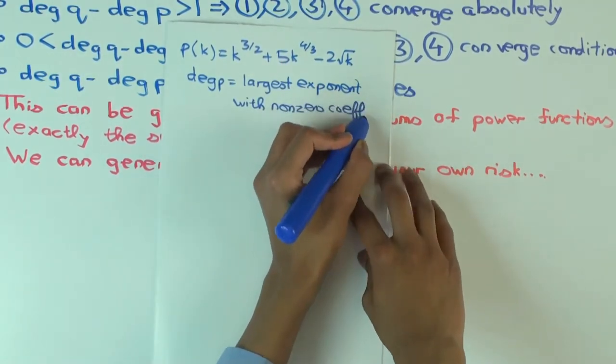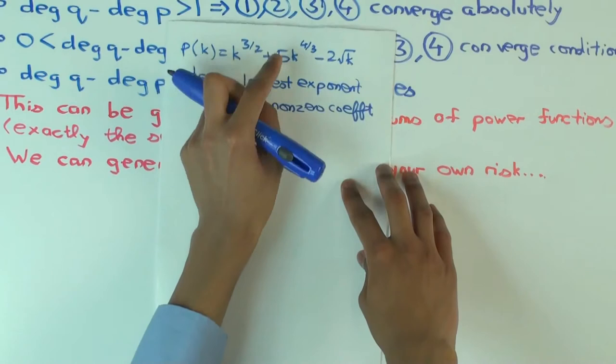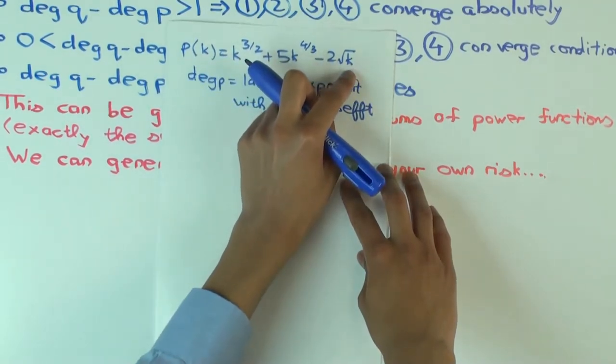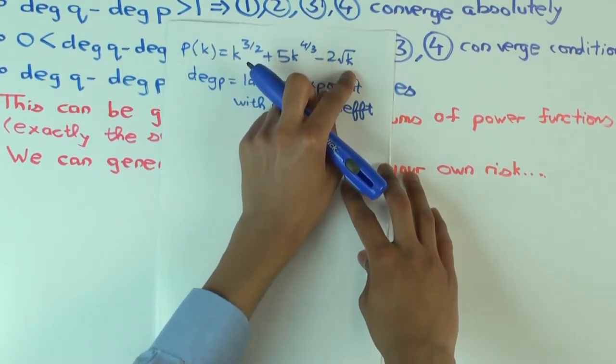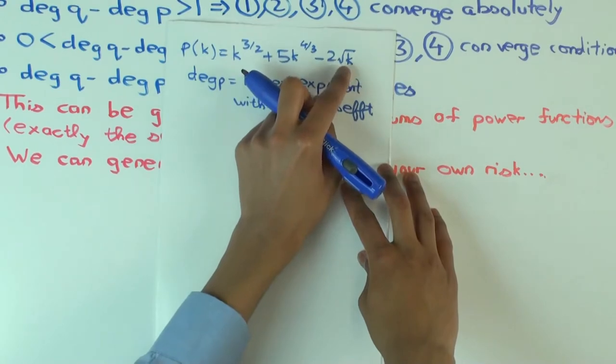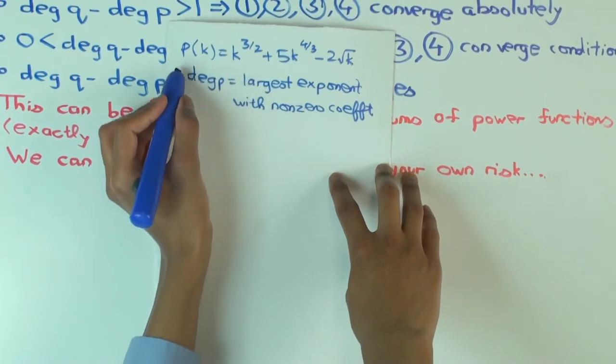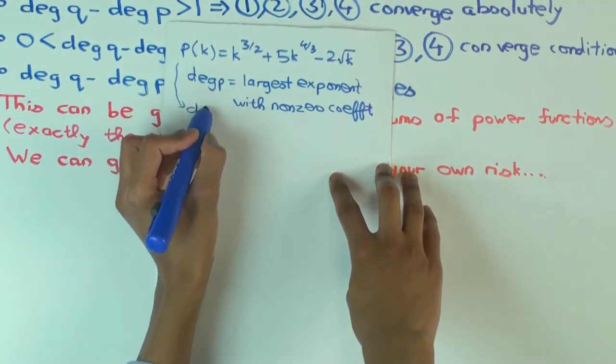Now in this case, you have to compare the exponents 3 over 2, 4 over 3 and what's the exponent here? One half. What's the biggest of those? 3 over 2, this one. So the degree here is, here its degree is 3 over 2.